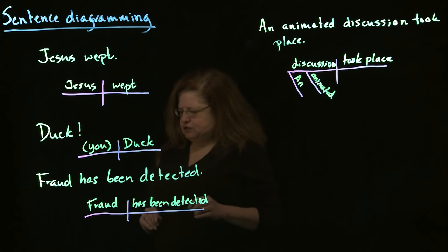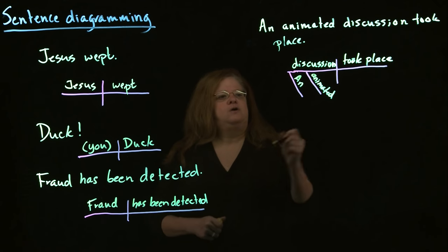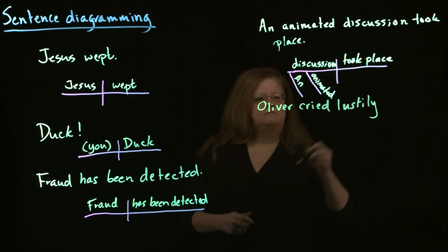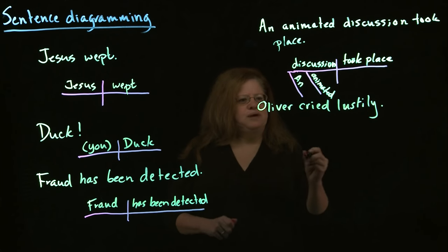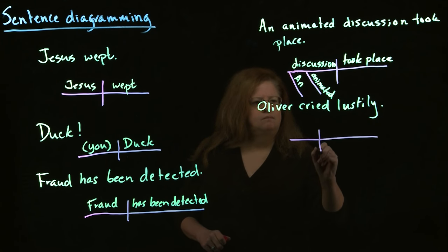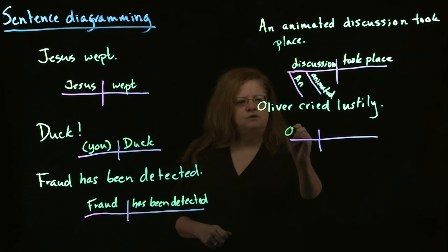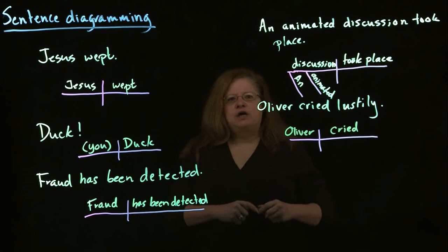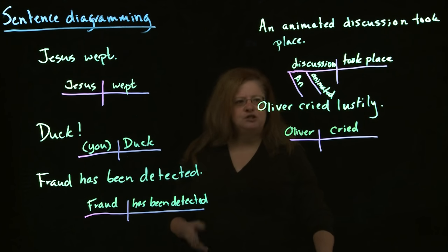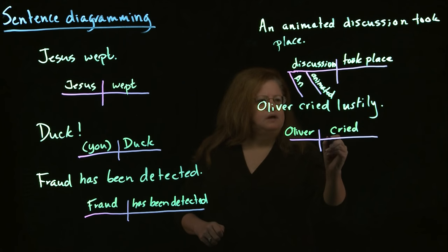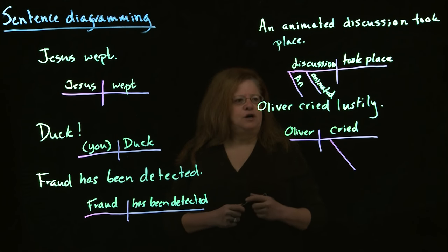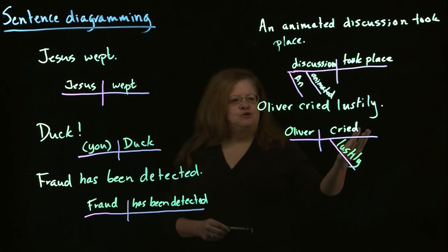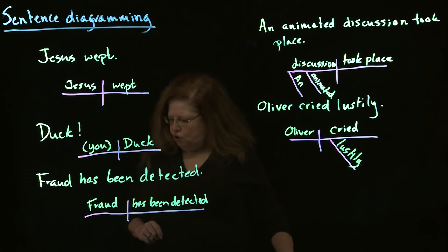We can also add adverbs to the sentence in a similar way. Take "Oliver cried lustily." We start with our basic framework: subject is "Oliver," verb is "cried." Now, "lustily" describes "cried" — it tells how Oliver cried — so it's an adverb. In the diagram, we have the adverb tucked in underneath the verb.